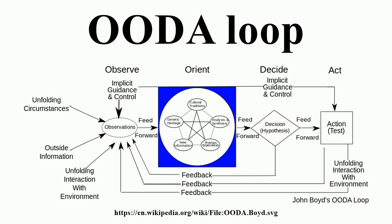Boyd's diagram shows that all decisions are based on observations of the evolving situation tempered with implicit filtering of the problem being addressed. These observations are the raw information on which decisions and actions are based. The observed information must be processed to orient it for further making a decision. In notes from his talk, Organic Design for Command and Control, Boyd said: the second O, orientation, as the repository of our genetic heritage, cultural tradition, and previous experiences, is the most important part of the OODA loop, since it shapes the way we observe, the way we decide, the way we act.